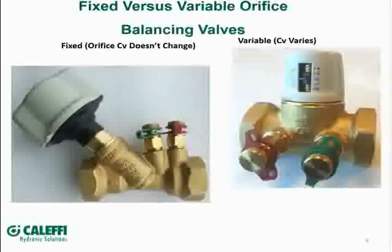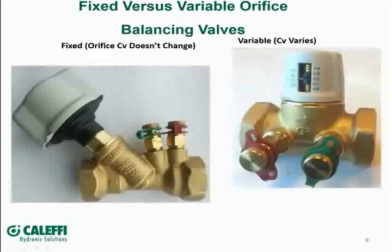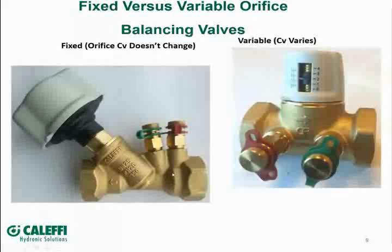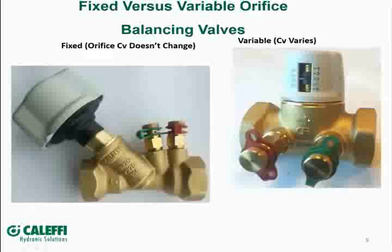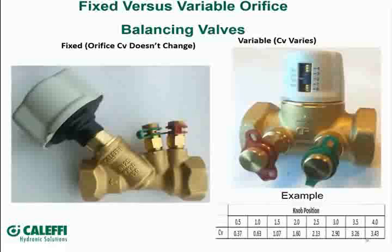Here's an example of a couple of balancing valves. Both are used to balance flow through a hydraulic or fluid system. You'll notice these two valves look a little different. The valve on the left is a fixed orifice — the CV doesn't change on this valve. The valve on the right has an adjustment mechanism, and you can actually vary the CV of this valve. Let me show you what that looks like on the data sheet that would come with this valve.